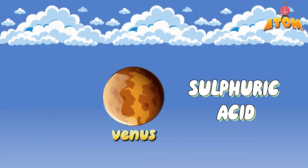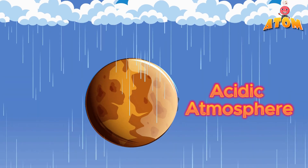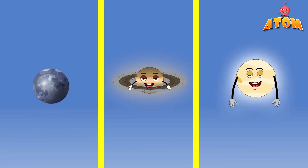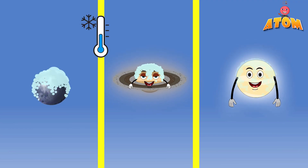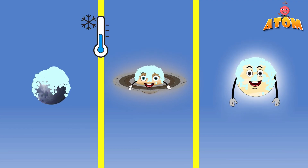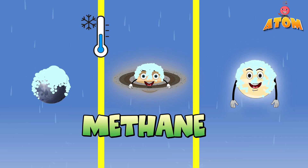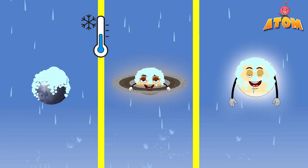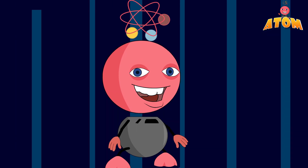Interestingly, the concept of rain varies across our solar system. On other planets like Venus, rain can be composed of sulfuric acid due to the highly acidic atmosphere. Meanwhile, on Titan, Saturn's moon, the extremely cold temperatures allow methane to condense and fall as rain.